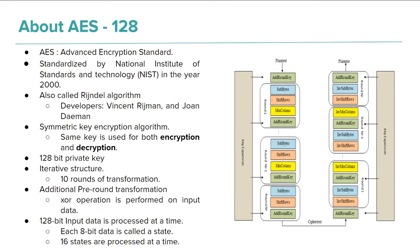AES stands for Advanced Encryption Standard. It was standardized by the National Institute of Standards and Technology in the year 2000. It replaced the DES encryption algorithm, which was not as efficient as AES. AES-128, also called the Rijndael algorithm, is a symmetric key encryption algorithm, meaning the same key is used for both encryption and decryption. The security depends entirely on the key — AES-128 has a 128-bit private key. There are different variants like AES-192 and AES-256 with different key sizes.